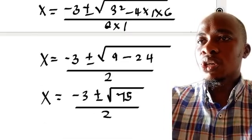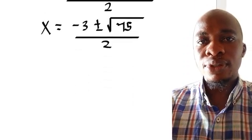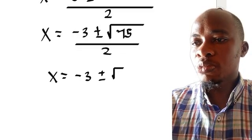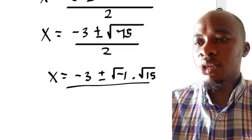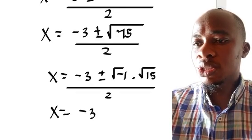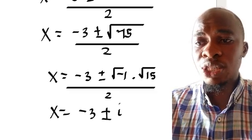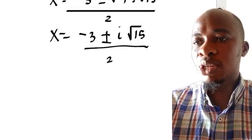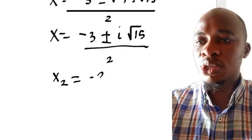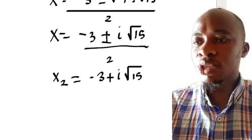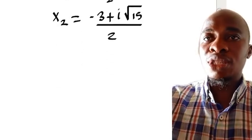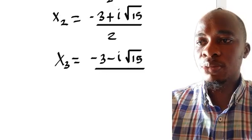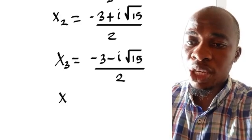So we're going to have x equals minus 3 plus or minus the square root of minus 1 multiplied by the square root of 15, all divided by 2. Since the square root of minus 1 is i, we have x equals minus 3 plus or minus i root 15, all divided by 2. So x₂ equals minus 3 plus i root 15 divided by 2, and x₃ equals minus 3 minus i root 15 divided by 2.